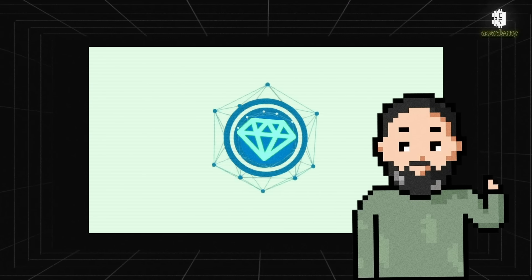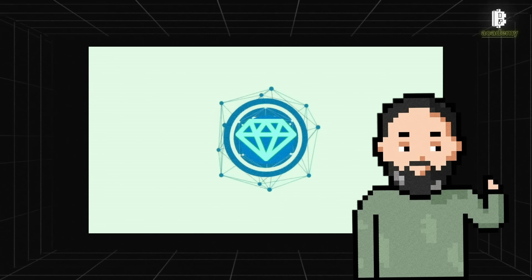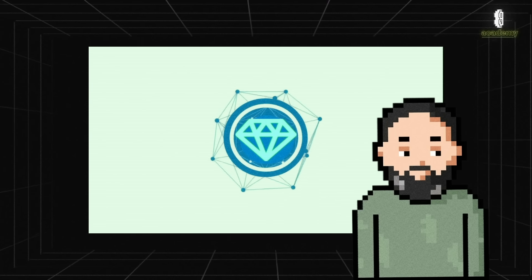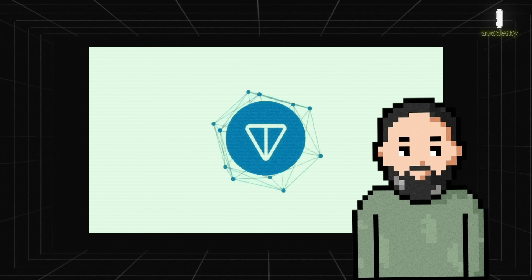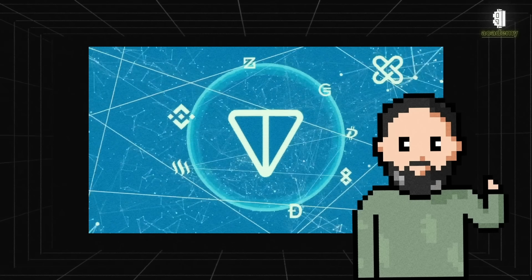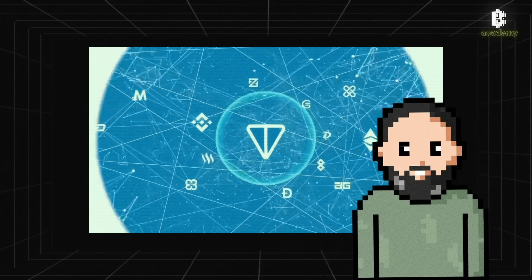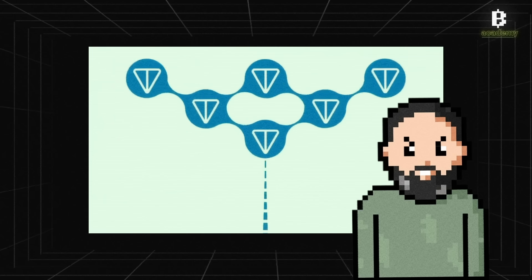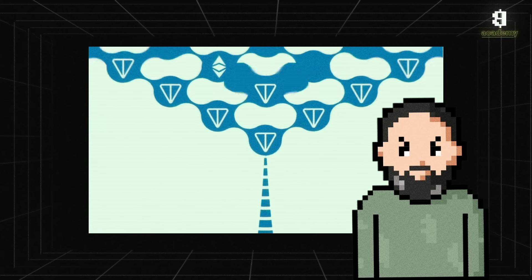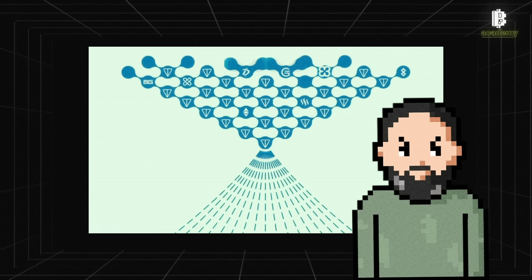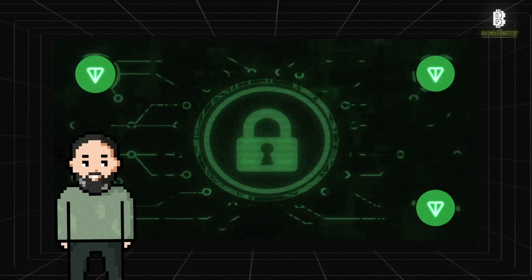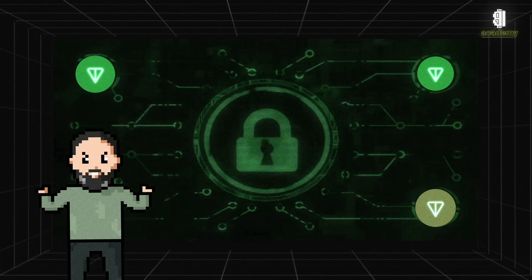An important element of the TON ecosystem is tokens. The main token, TON Crystal, is used for various transactions within the network. Tokens are used to pay for fees, staking, and participating in network governance, ensuring decentralization and security. Users can also earn tokens by participating in the network, providing computing power or storage.